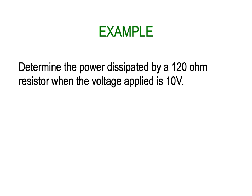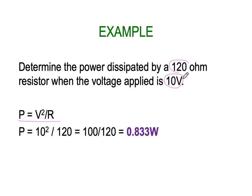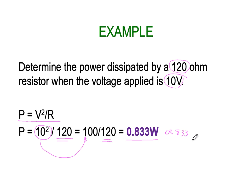Here's an example: determine the power dissipated by a 120 Ohm resistor when a voltage of 10 volts is applied. Using P = V²/R: V is 10 volts and R is 120 Ohms. So we calculate 10 squared divided by 120. Ten squared is 100, divided by 120 gives 0.833 watts, which can also be expressed as 833 milliwatts.